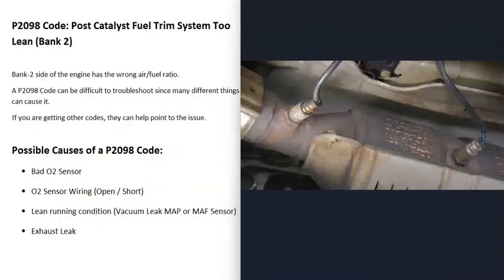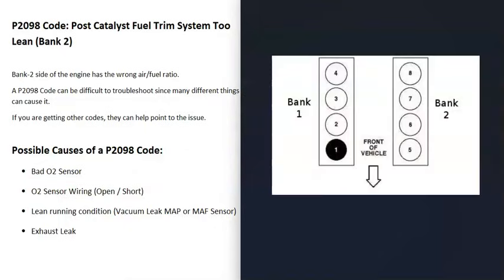For some reason, these sensors are reporting back to the computer that there's a lean condition, which basically means there's more air than gas going into the cylinders — the air-fuel ratio mixture is wrong. In V6 and V8 engines there are two banks: bank 1 is always the side of the engine with the number one cylinder, and bank 2 is the opposite side.